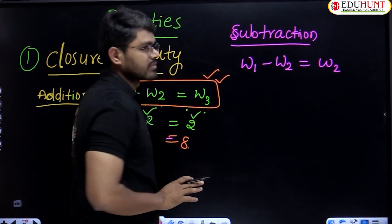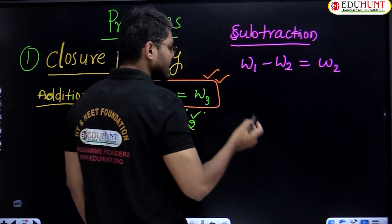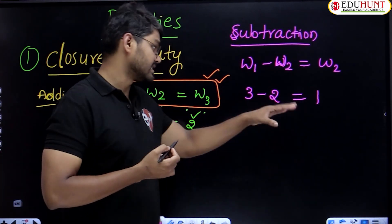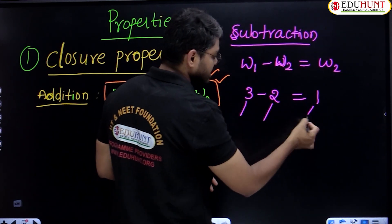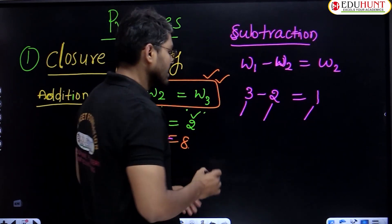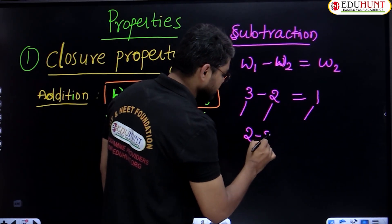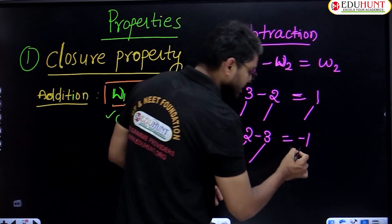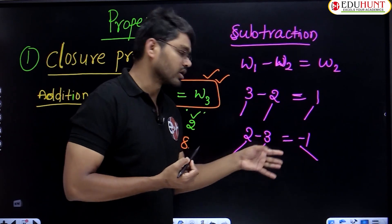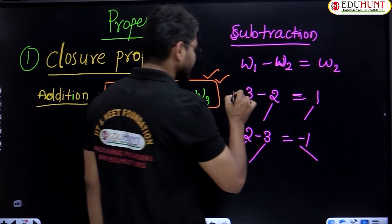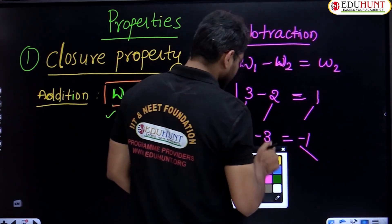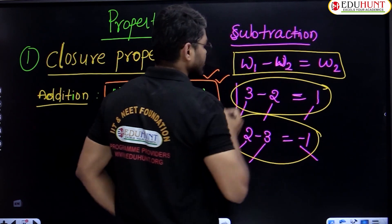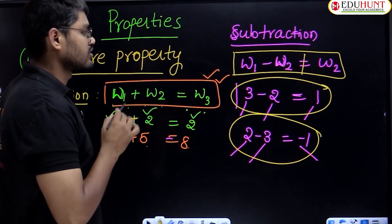If it is possible, we put the equal to symbol; if not, we put the not equal to symbol. First example: three minus two equals one. Three is whole number, two is whole number, one is also whole number — it is possible. Now reverse the digits: two minus three equals minus one. One whole number minus another whole number, but this result, minus one, is not a whole number.